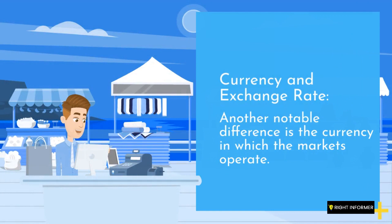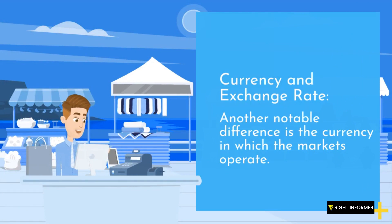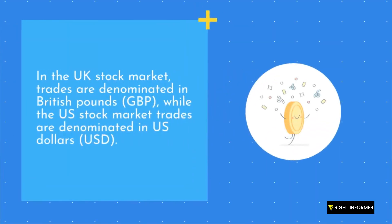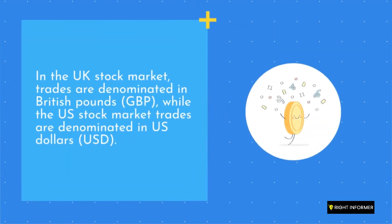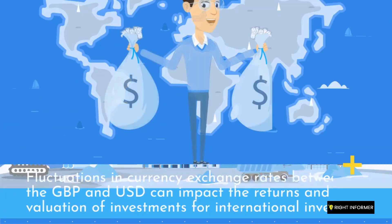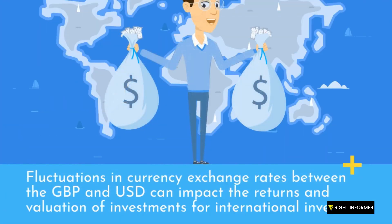Currency and Exchange Rate: Another notable difference is the currency in which the markets operate. In the UK stock market, trades are denominated in British pounds, while the US stock market trades are denominated in US dollars. Fluctuations in currency exchange rates between the GBP and USD can impact the returns and valuation of investments for international investors.